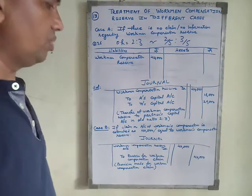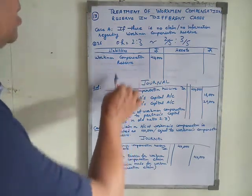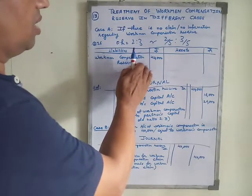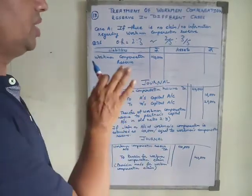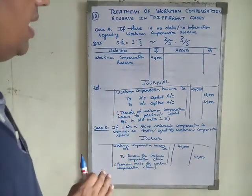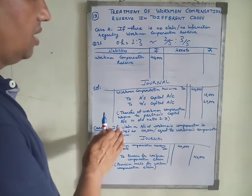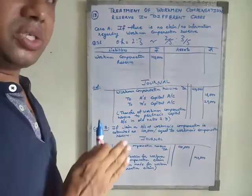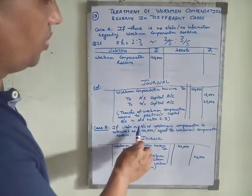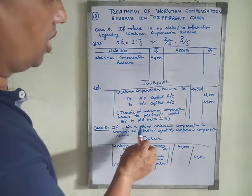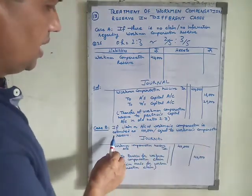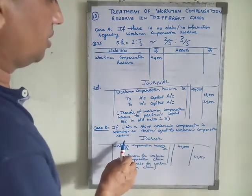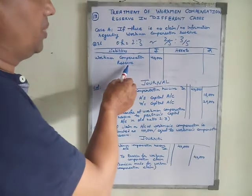The second case applies when the workman compensation claim is estimated as equal to the workman compensation reserve shown in the balance sheet — that is, the claim equals the reserve. Here the workman compensation reserve is 40,000 and the claim given for workman compensation is also 40,000.